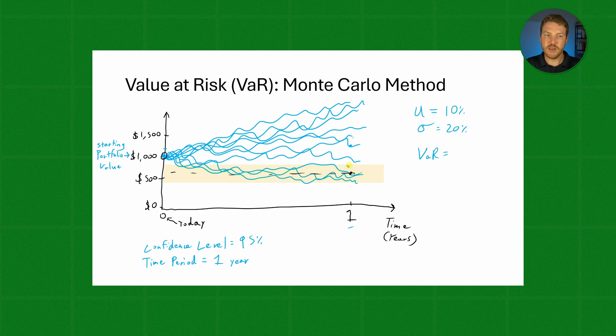And that ends up being, let's say that we end up with about $600 in that fifth percentile worst outcome. Why is it fifth percentile? Because it's the confidence level minus one, which would give us that fifth percentile worst outcome.